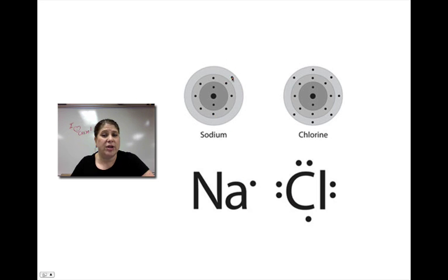Sodium has one valence electron in its outer shell right here, so we put one dot. Chlorine has seven, so we put seven dots.